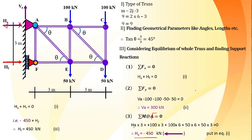Substituting HA = -450 into equation 1, we get HF = 450. Since HF is positive, the assumed direction for HF is correct. We now have all external support reactions: VA = 300, HA = -450, HF = 450.